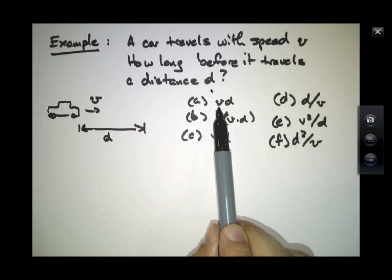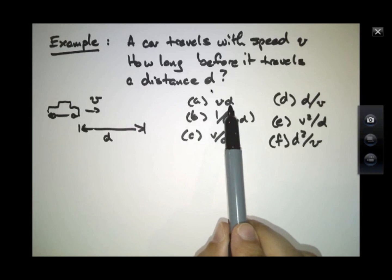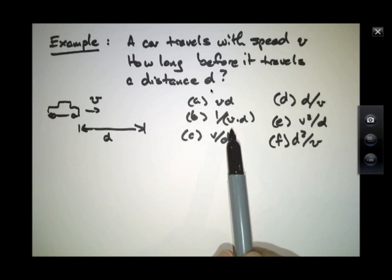Answer a would be a length over a time, multiply by a time, so divided by a length, that would be a length squared over time. That's not correct. This would be 1 over that, so that would be a time over a length squared. Again, not correct.